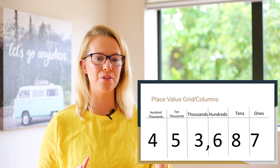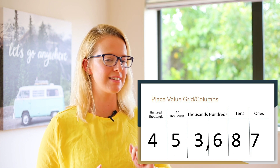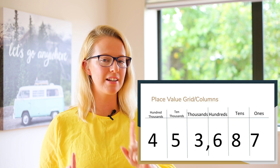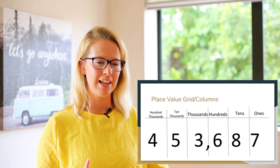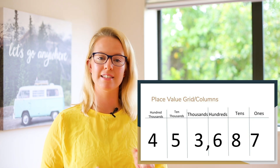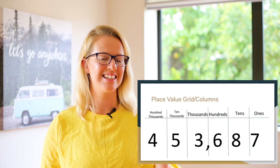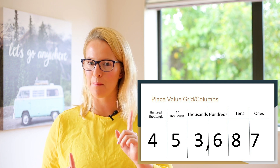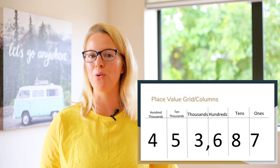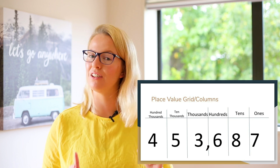Now we've got our place value grid going up to ones, tens, hundreds, thousands, tens of thousands, and hundreds of thousands. I've got lots of digits in this number. Let's choose one to figure out the value. Let's look at the number six — the six is in the hundreds column — so the value of the six is six hundred.